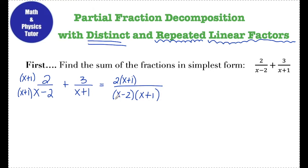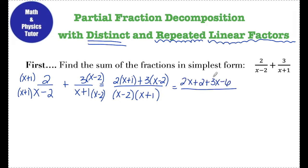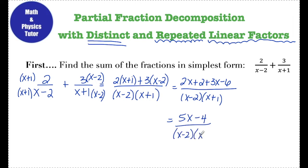For the second term, to get the denominator to be x minus 2 times x plus 1, I'm missing the x minus 2, so I multiply top and bottom by x minus 2. That gives me plus 3 times (x minus 2) in the numerator. Now both fractions share a common denominator, so I can write them as one fraction. Simplifying the numerator: 2x plus 2 plus 3x minus 6 gives 5x minus 4 over x minus 2 times x plus 1.